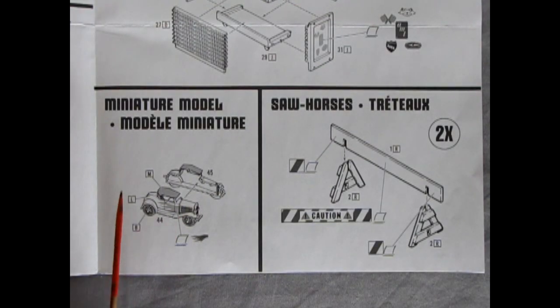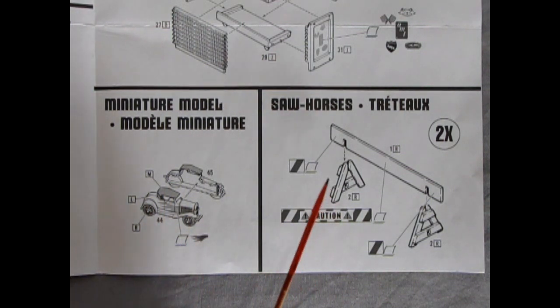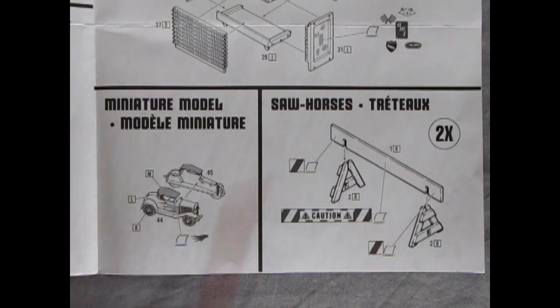And down here we have a miniature model that you can build with some little flame decals for the sides, as well as these great sawhorses, and you do get two in this kit.